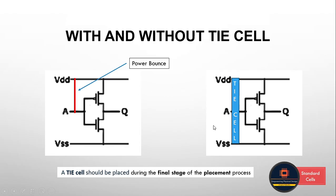The Tie Cell is placed close to the net where it acts as an interface between the net and the power rails. A commonly asked interview question is: how does the Tie Cell prevent voltage fluctuation? The Tie Cell acts as a voltage regulator or buffer. It is intentionally designed with a small internal capacitance that effectively smooths out voltage fluctuations. The Tie Cell absorbs the spike or fluctuation before it reaches the gate of a transistor, maintaining a stable voltage level at the input of a logic cell, so no voltage fluctuation affects its output.